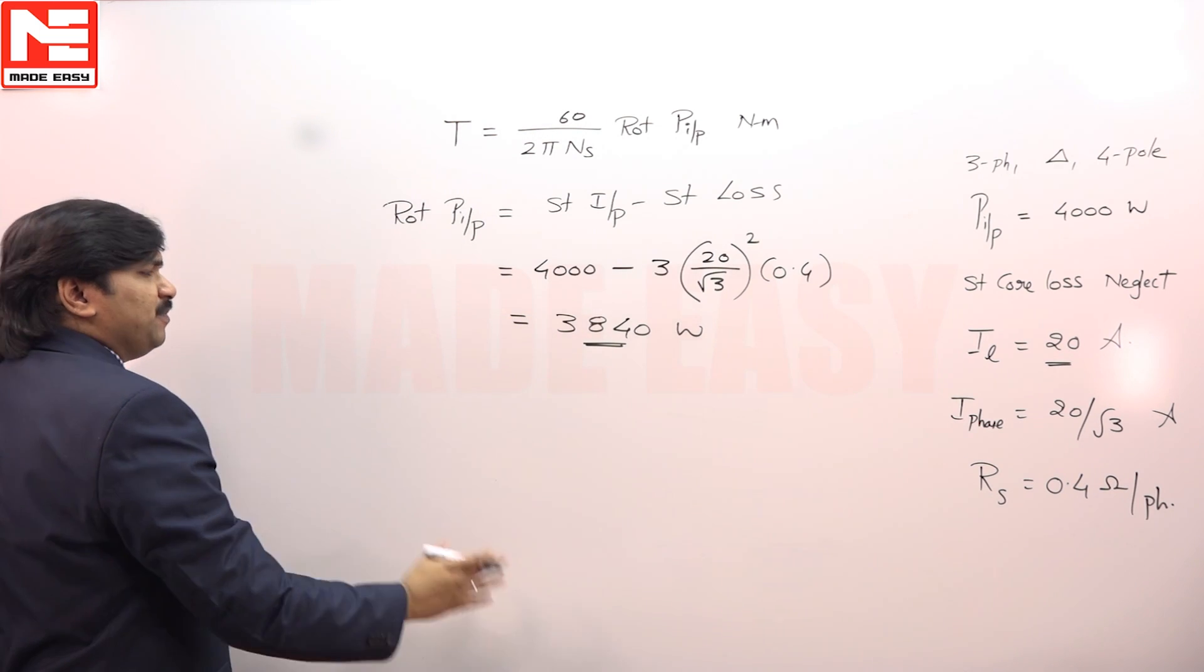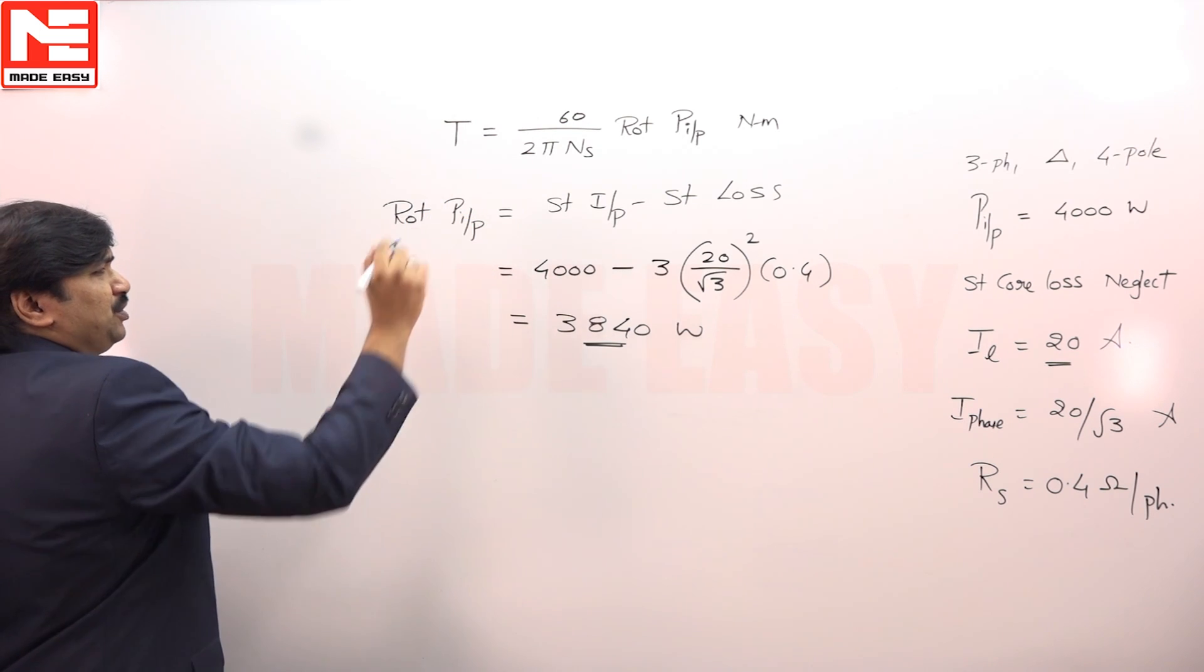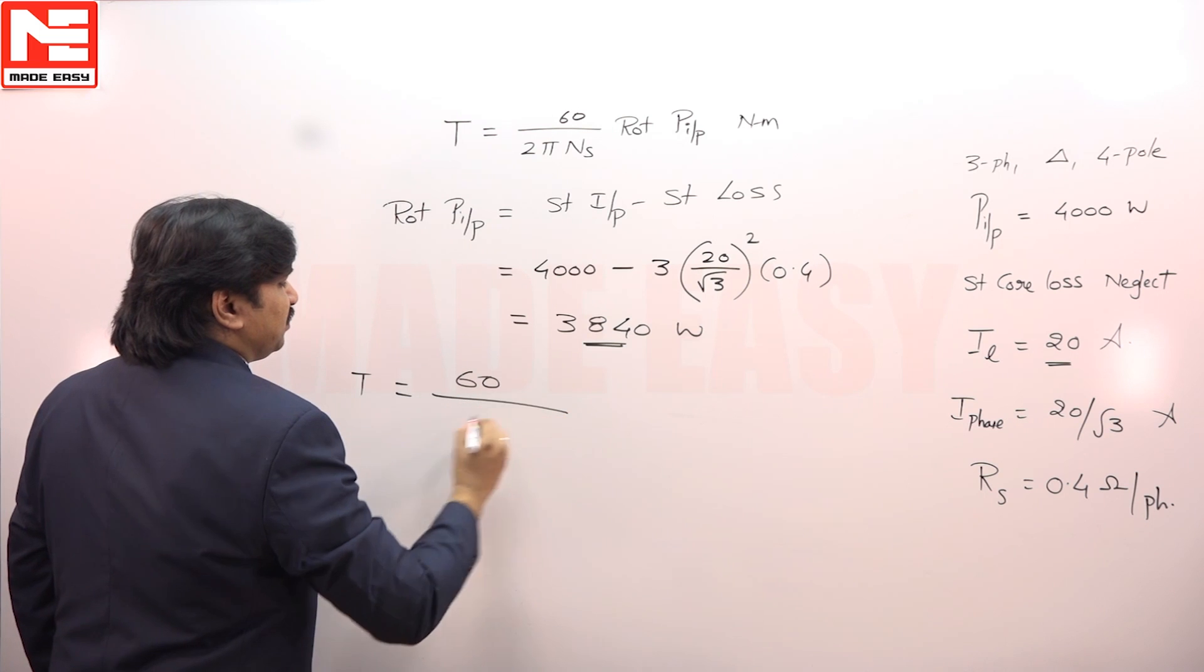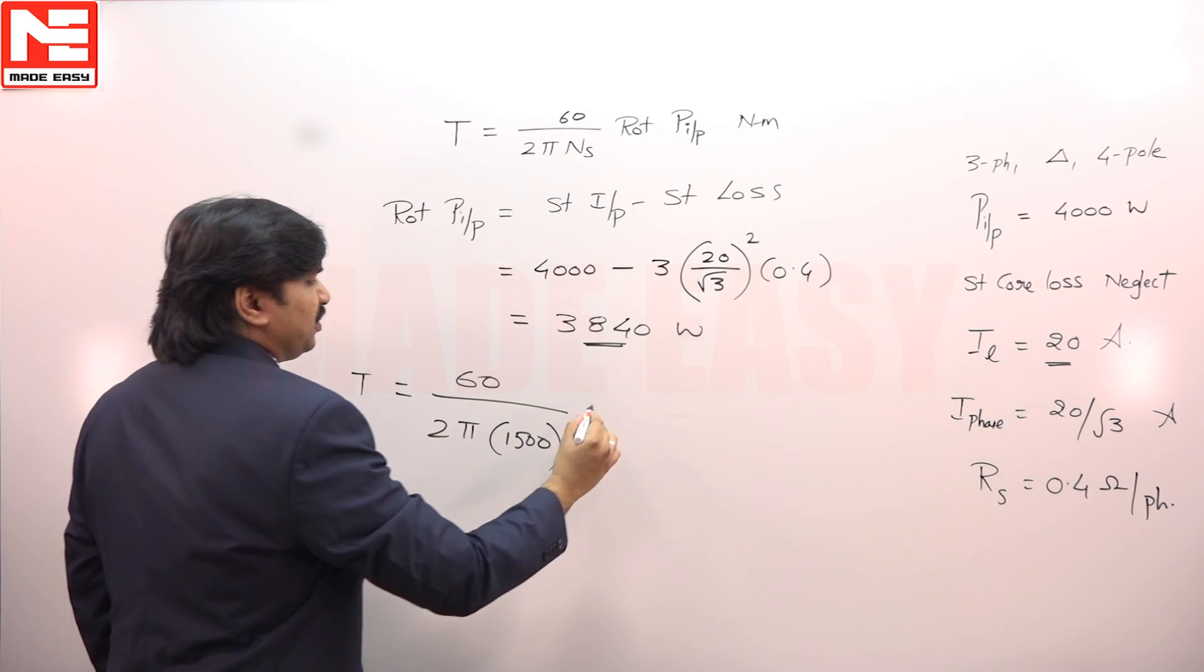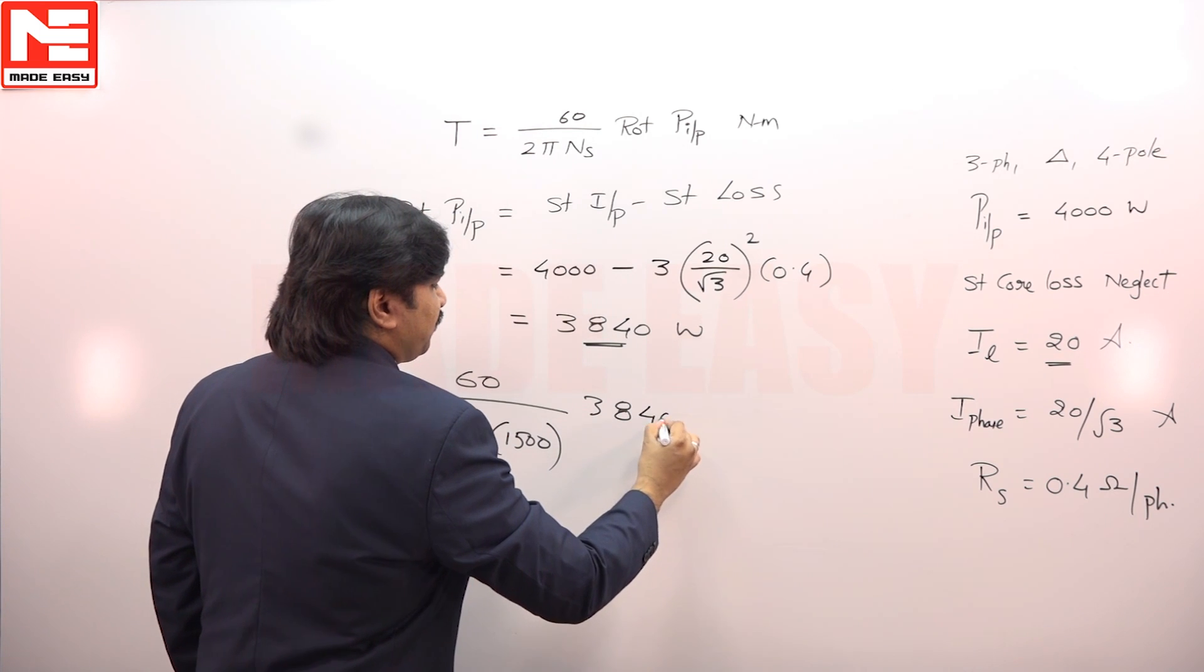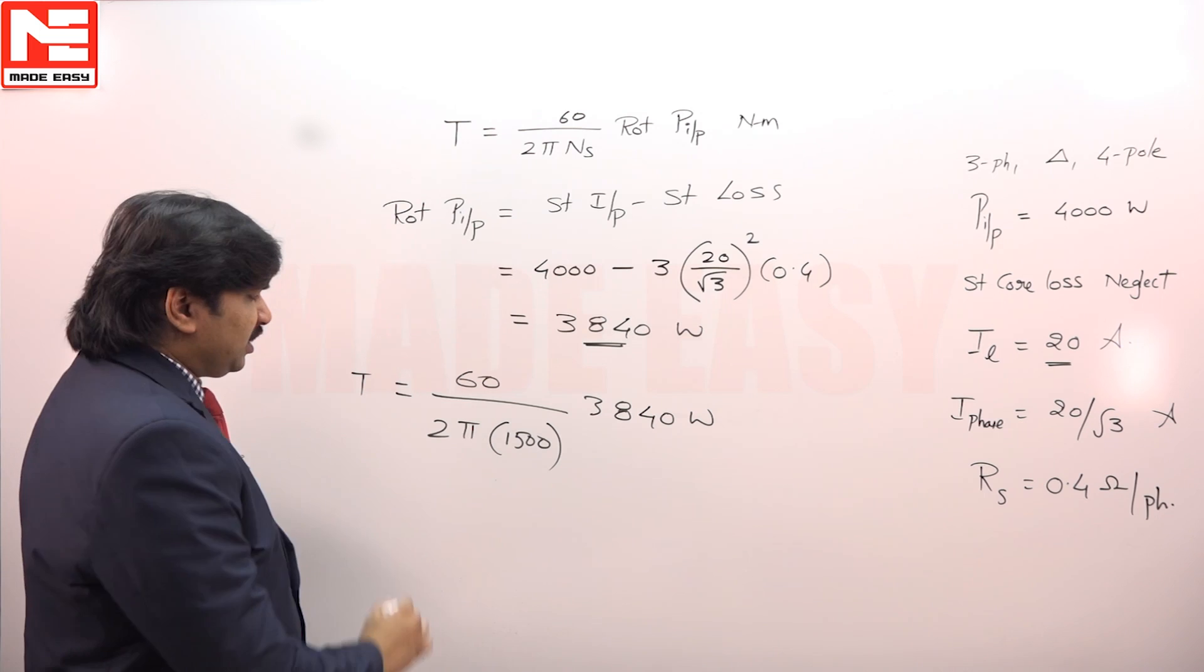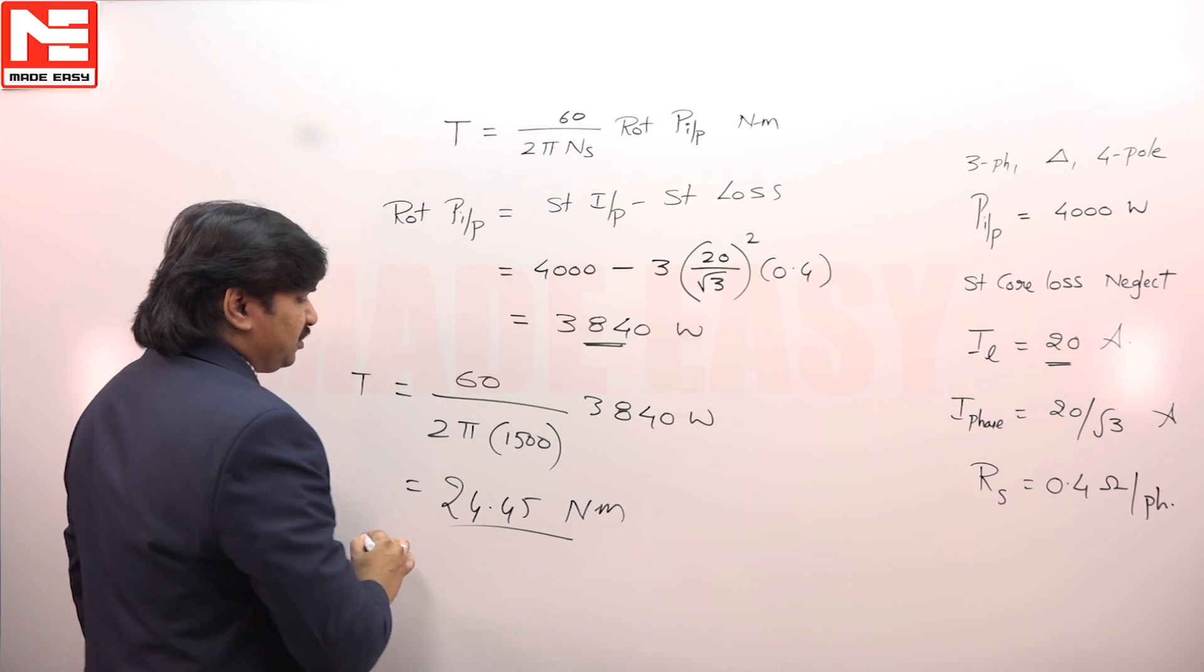Rotor input means air gap power, that is the power going on to the rotor. So we can directly substitute for torque calculation. T is equal to 60 by 2π into 1500 into 3840 watts. From this we get 24.45 newton meters.